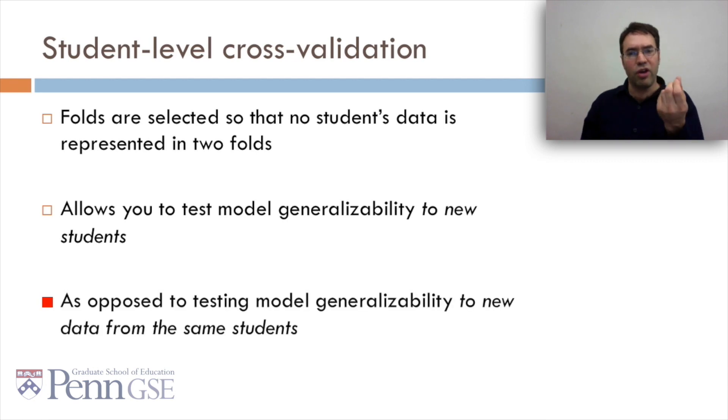By contrast, flat cross-validation, or even stratified cross-validation, can just test model generalizability to new data from the same students. Think about it. Do you want to build a model that will work on new data from the same kids you have data on? Or do you want to build a model that will work for entirely new kids? Usually we want to build models for entirely new kids, and for this purpose, student-level cross-validation is important to do.